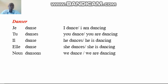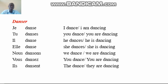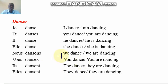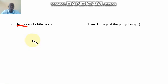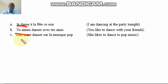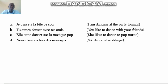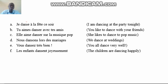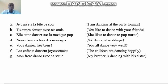The next verb is 'danser,' meaning 'to dance.' The same ER verb rules apply. So 'je danse,' 'tu danses,' 'il/elle danse,' 'nous dansons,' 'vous dansez très bien,' 'les enfants dansent joyeusement,' 'mon frère danse,' and 'on commence à danser' — you can also use this with the infinitive level. Take note that everything follows the same pattern as 'parler.'